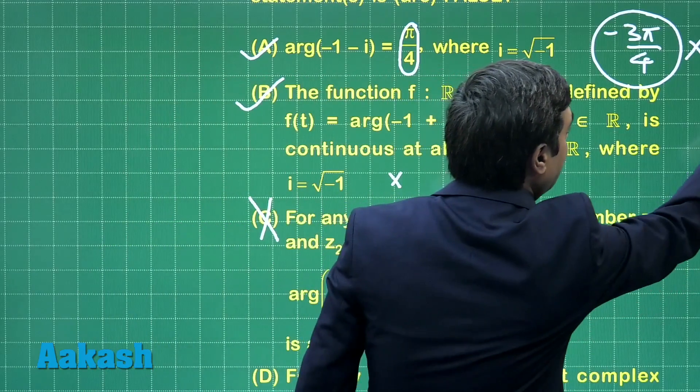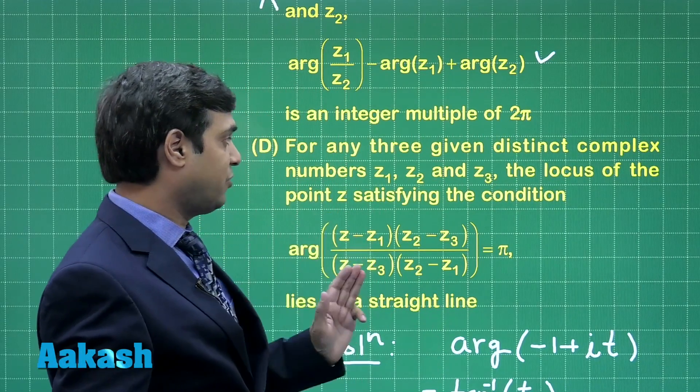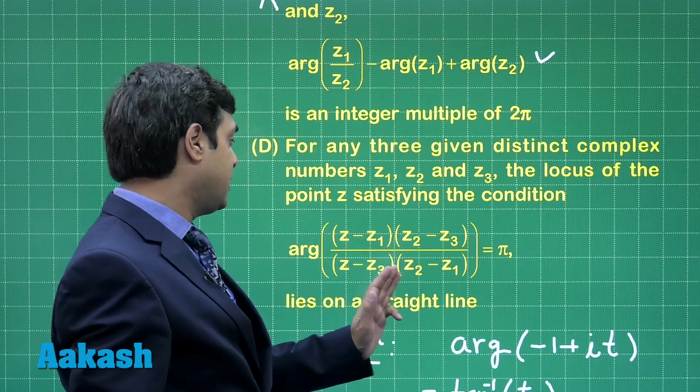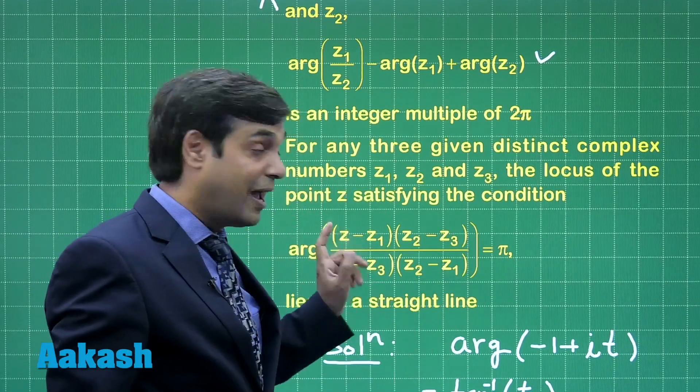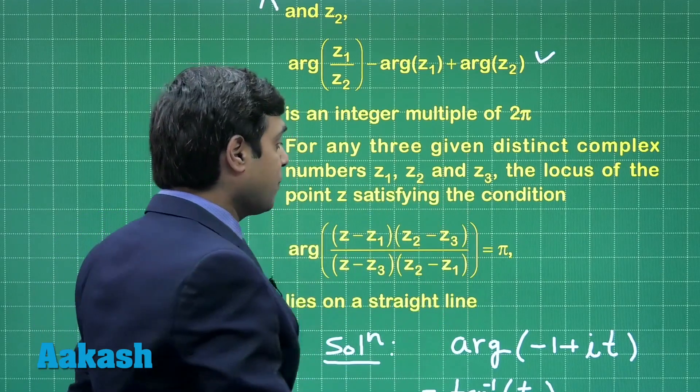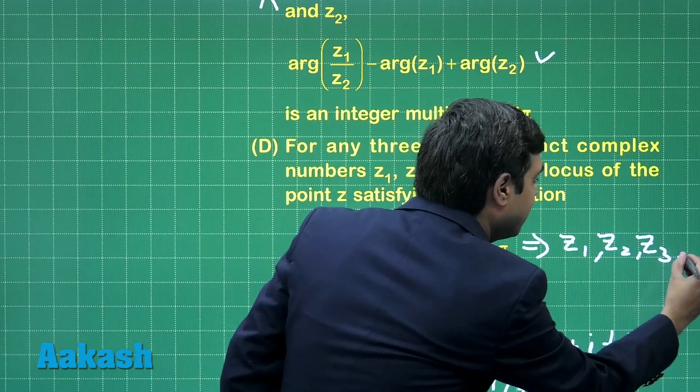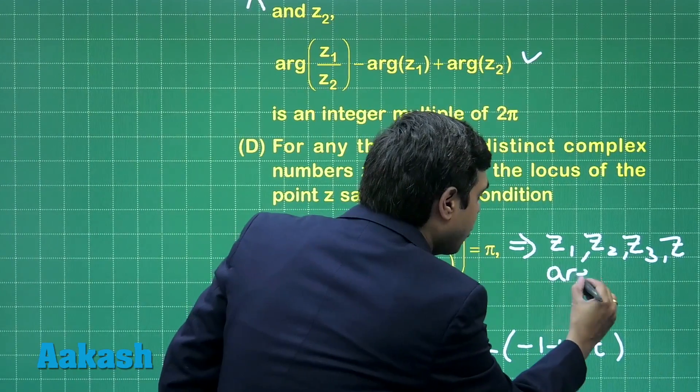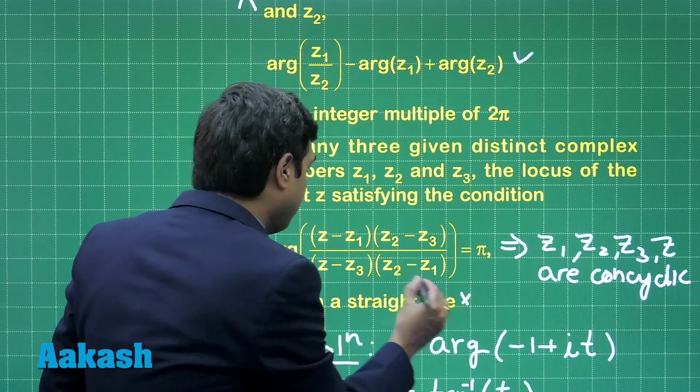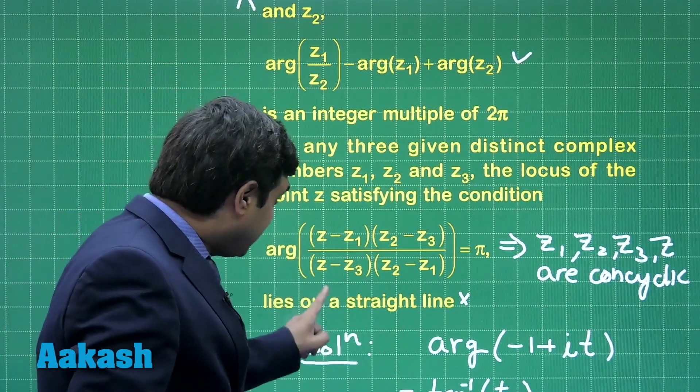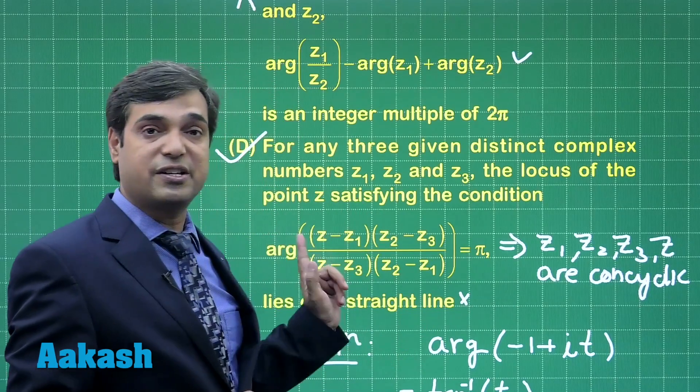Moving to the fourth option. The fourth option says for any three given distinct complex numbers z1, z2, and z3, the locus of point z satisfying the condition argument of this term equals pi lies on a straight line. This is false as this condition is for concyclic points. It means that z1, z2, z3, z are concyclic. This statement is false, meaning this is our correct option. The condition for a straight line would have been argument of z minus z1 upon z minus z3 equals 0 or pi. That was the condition for a straight line.